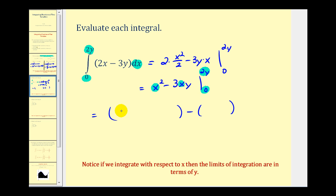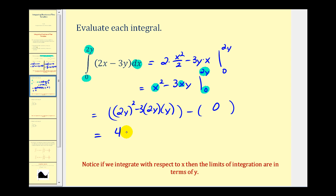Because we integrated with respect to x, we replace x with 2y and 0. So we'll have 2y squared minus 3 times 2y times y, and with x equal to 0 both terms vanish. That gives us 4y squared minus 6y squared, so the result is negative 2y squared.